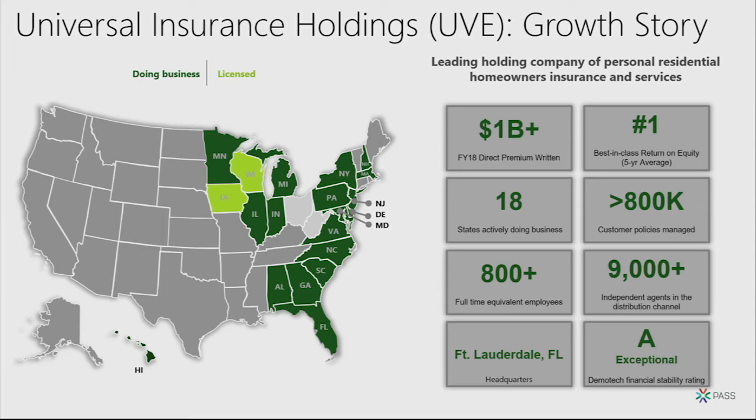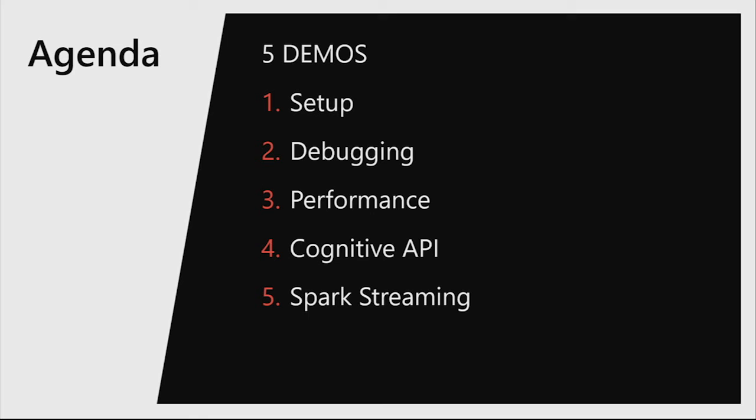We're going to jump straight into the demos. This is a level 400 session — you guys are very ambitious to come to a 400 session at 8 a.m. There is a lot of code here; I'm going to be going fast. The demos are included in the slide deck, which guarantees nothing goes wrong. We're going to go through the setup process of adding Machine Learning Services features, show how to debug a Python app, and do performance metrics on the Python code itself.